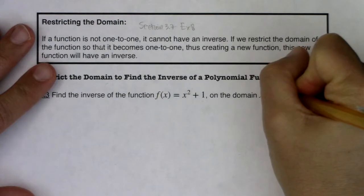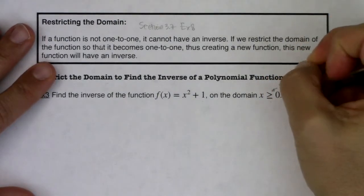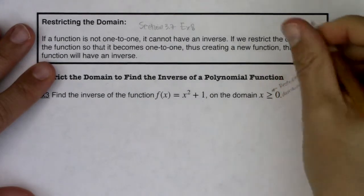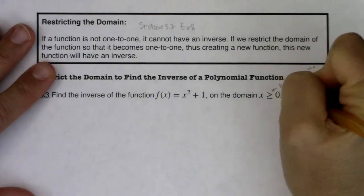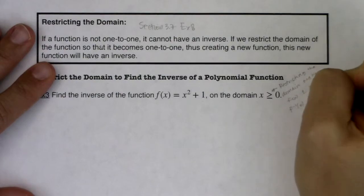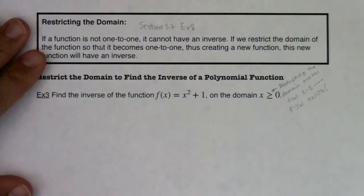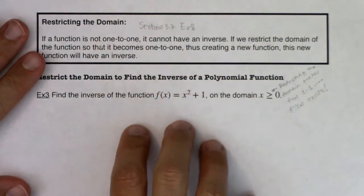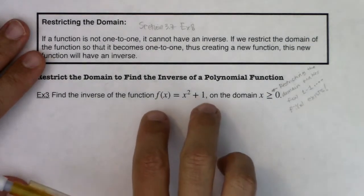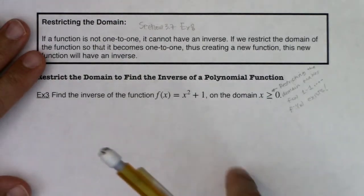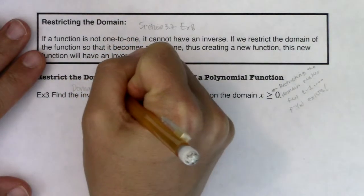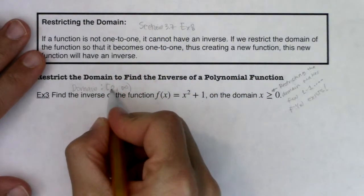So restricting the domain makes our function one-to-one, and that means f-inverse exists and we can go find it. When dealing with functions and their inverses, I like to find the domain and range of the original function first, because the domains and ranges flip-flop between the original and inverse functions. We already know the domain of the original function — it's x ≥ 0, or written as an interval: [0, ∞). Now for the range, I need to go from low to high.